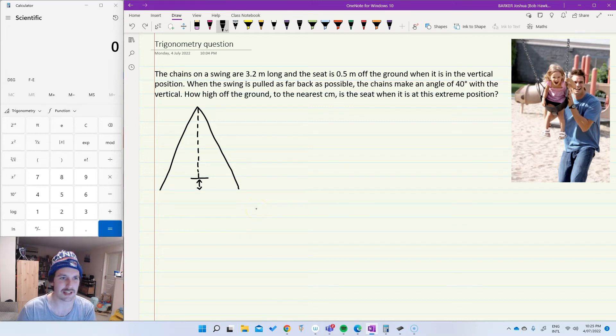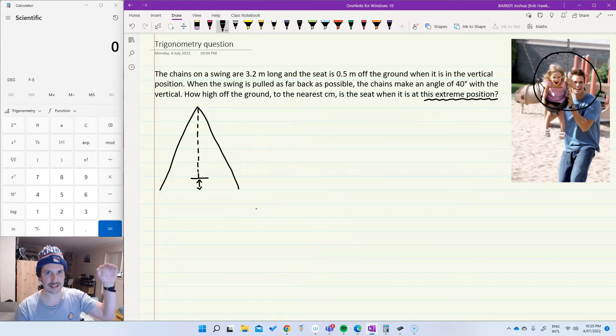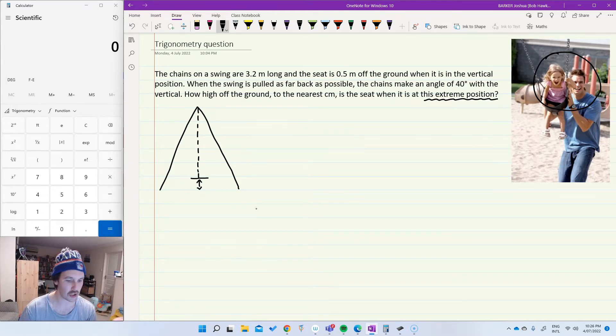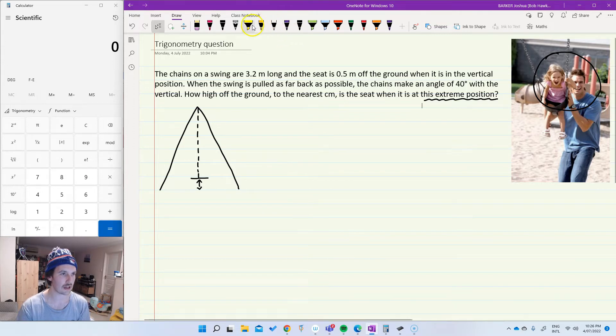Hey champions, today we've got a bit of an interesting trigonometry problem. It's involving a dad and a daughter at the park. He's going to lift her up to the extreme position on the swing and we've got to find out how high the kid is off the ground once we get her up to that point. Probably the hardest thing here is figuring out what the information is actually showing us. So I'll go through this a little bit at a time.